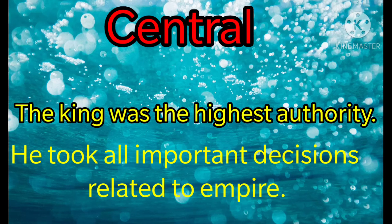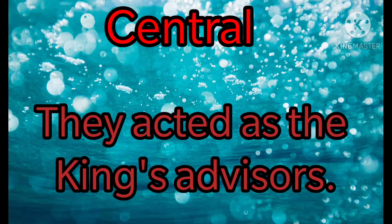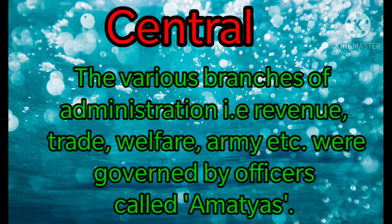First of all, let us discuss Central Administration. The king was the highest authority of the Central Administration. He took all important decisions related to the empire. He was assisted by a council of ministers.